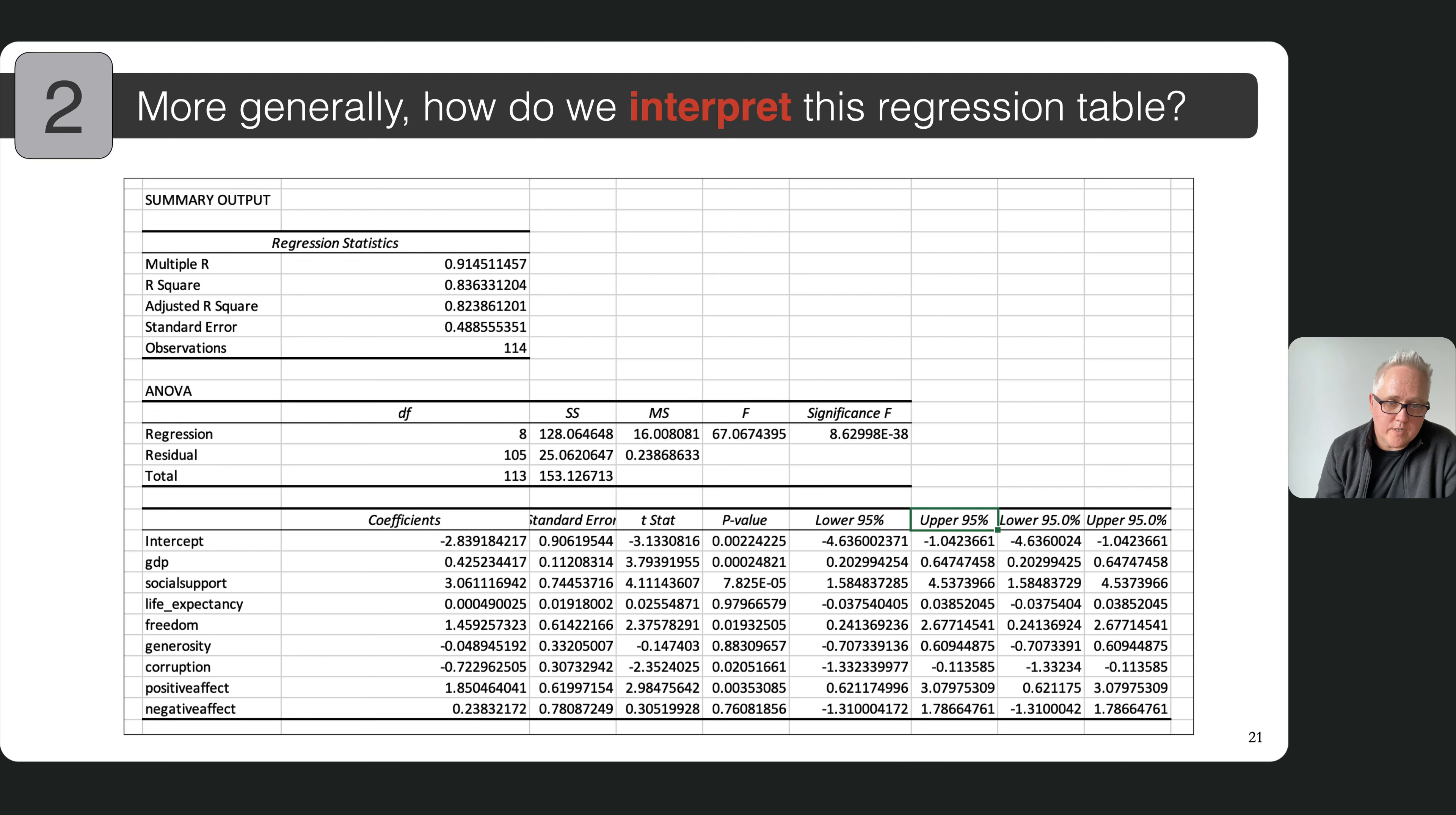Most regression tables either present numbers at two decimal places or three, and that would basically round to 0.000. So you basically have a zero p-value that allows us to reject the null hypothesis that there's no relationship in favor of our alternate hypothesis that GDP is a statistically significant predictor of happiness. And you can run through each one of these different variables.